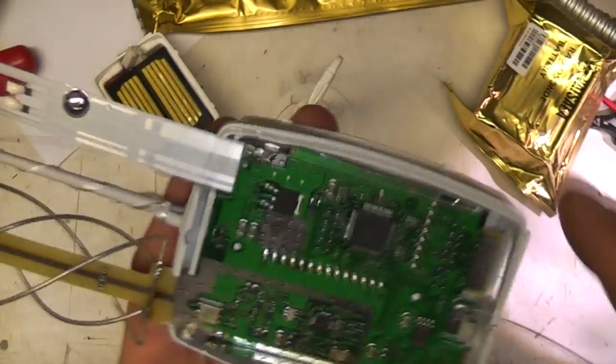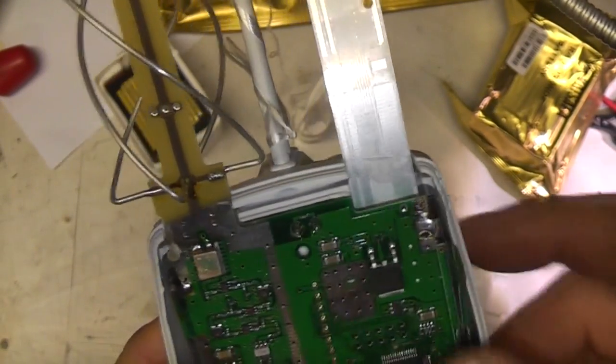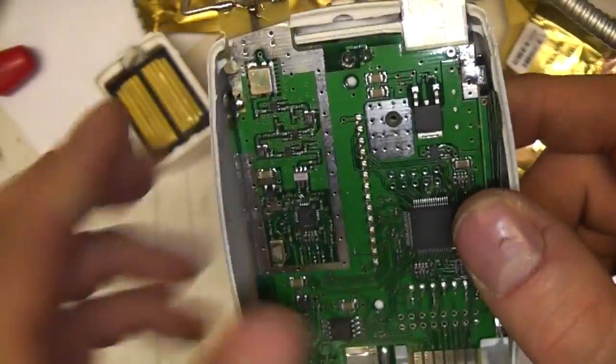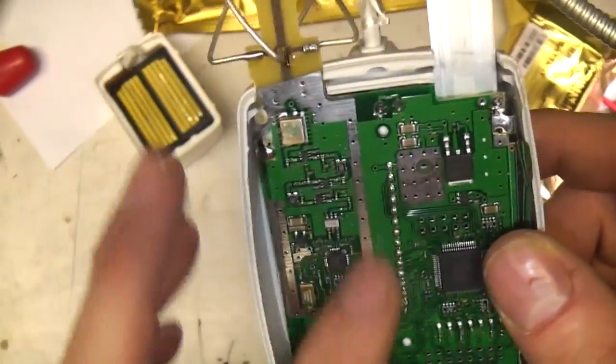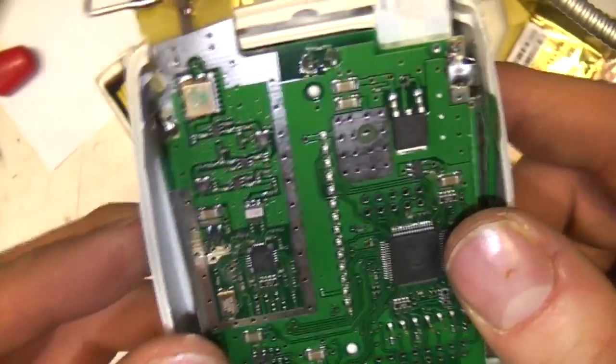Take this lid off. You can't see a great deal here, just obviously a few random bunches of chips. There's provision for a shielding can on this side that's not fitted. There's a shielding can on the other side. Let's get this shielding can off.